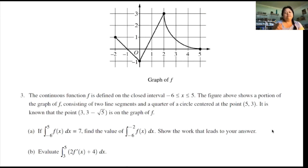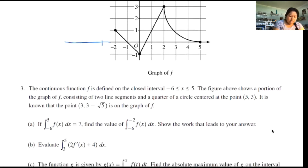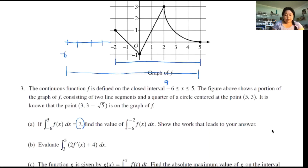Part A says: if the integral from negative 6 to 5 is defined as 7, find the value of the integral from negative 6 to negative 2. Show the work that leads to your answer. So negative 6 to 5 means that if we extend this graph all the way out, the full length of the area is equal to 7. From the graph, I can see the area from negative 2 to 5. So if I can use the 7 and subtract what I see there, I will have the region from negative 6 to negative 2, which is the integral I want.